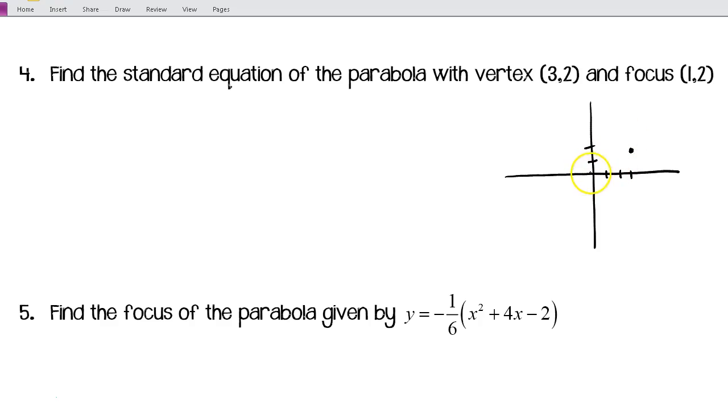My focus is (1, 2), and I know that my focus has to be inside. So I know that my parabola is going to have to open up to the left. I know that p is negative, p is less than 0. And since it's horizontal, I know that my y is going to be squared. So this is (y - k) squared equals 4p times (x - h).